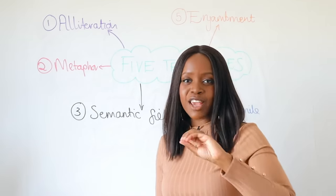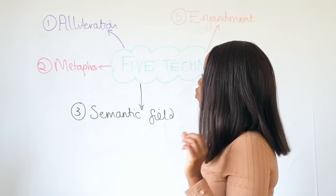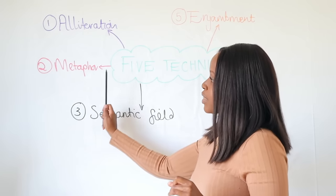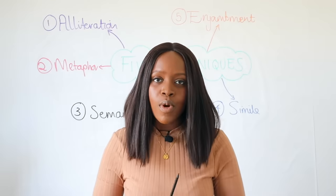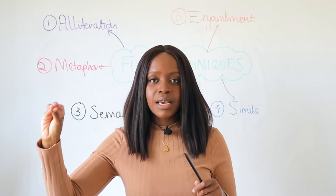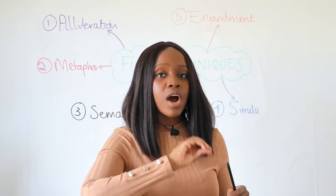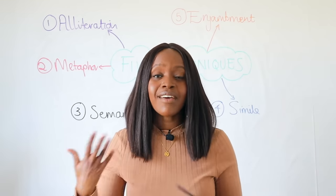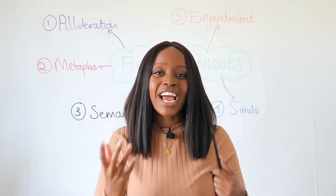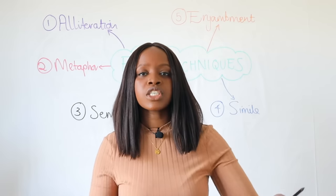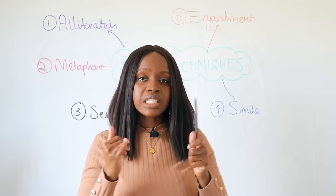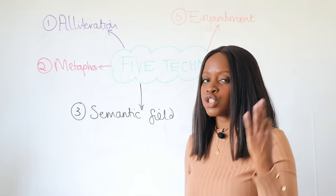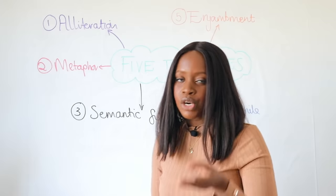You can bank on alliteration coming up in any poem. The second technique you can almost always anticipate is metaphor. A metaphor is when another object or thing is described as if it were something else. For example, calling somebody a pig is a metaphor — that person is not an actual animal; you're using a different object to compare them, but without using 'like' or 'as.' Metaphor is when you describe something as if it were something else, and any poem put in front of you will always include one.